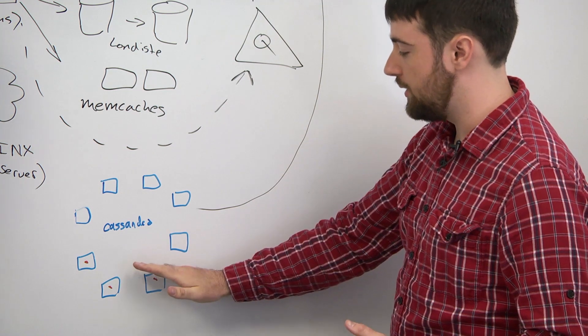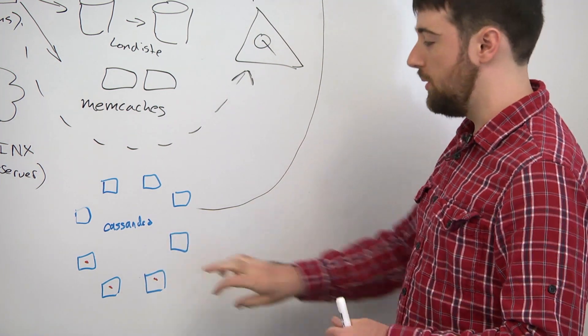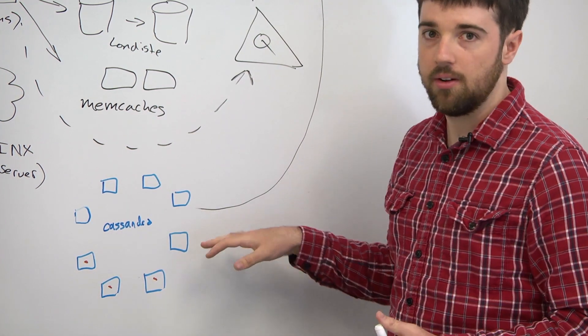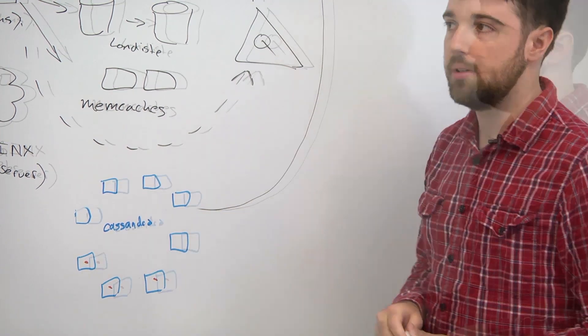And so when this node fails, it'll just go to the next one. And so we have 10 nodes, we lose one, only one-tenth of your keys get redistributed.